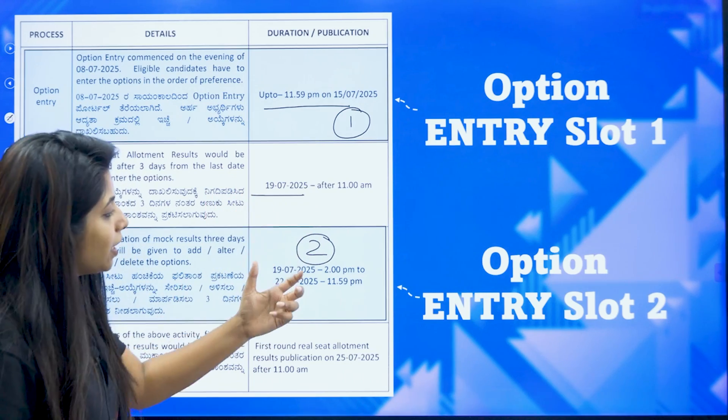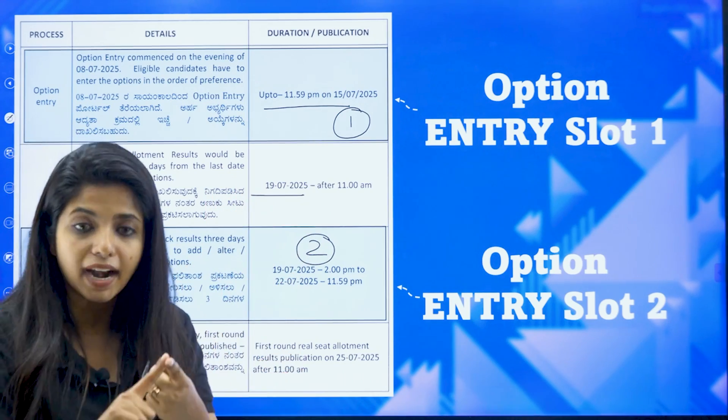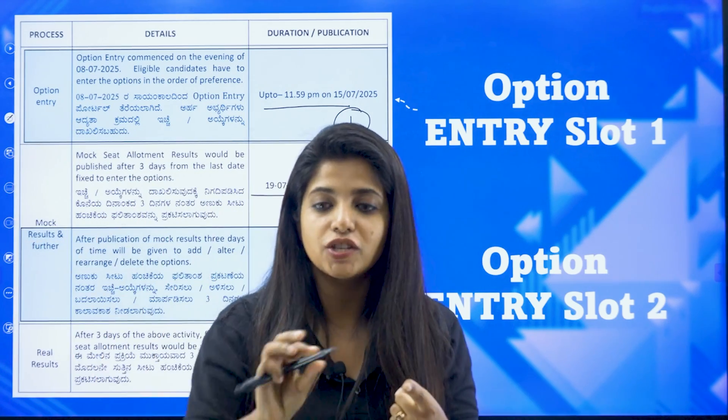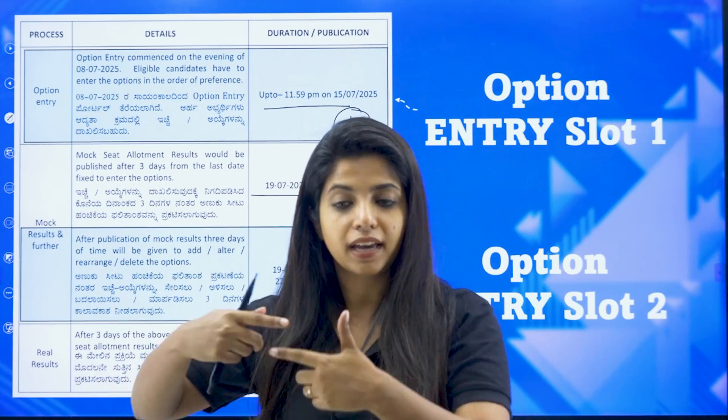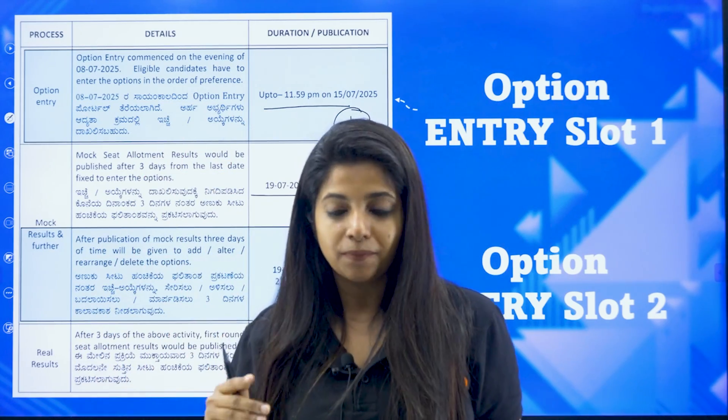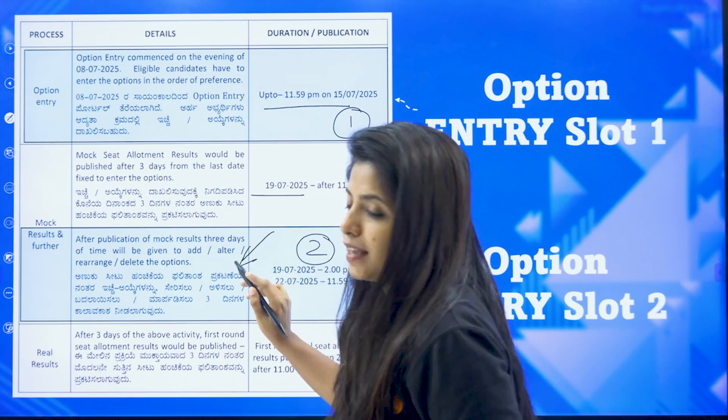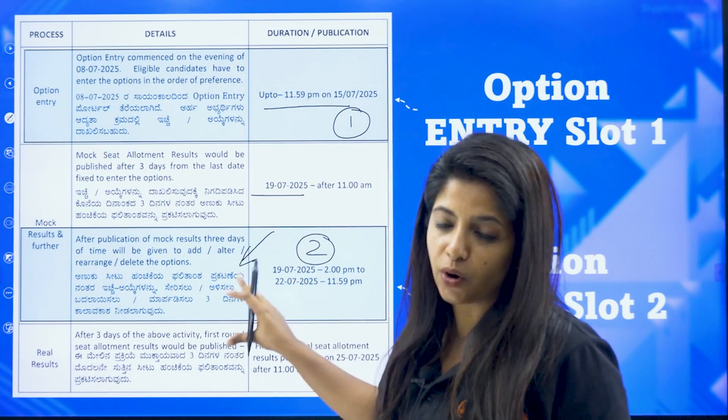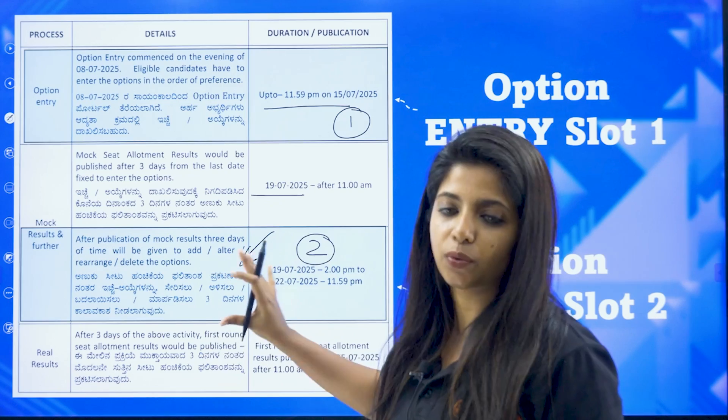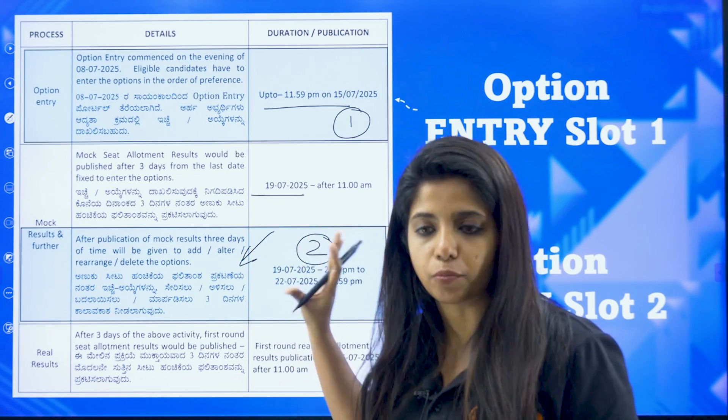Once you do that, my dear children, you will again get an option to rearrange. You can add certain college. You can remove certain college. You can modify. You can rearrange as well. Remember, adding of option will be happening only in this particular round. After this, once you are done with that, you would not be allowed to add options.